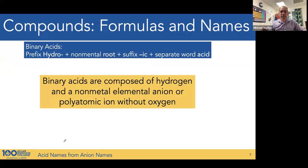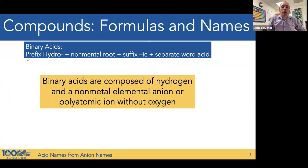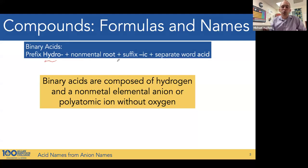There are two types of acid nomenclature. The first is binary acids, which are composed of the hydrogen cation and a non-metal element anion, or a polyatomic anion without oxygen, like cyanide. To name binary acids, we start with the prefix hydro, then the non-metal anion's root with the suffix -ic, and then the word acid.